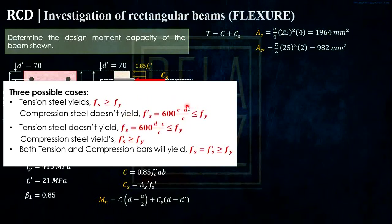So the second case is baliktad naman. The tension steel doesn't yield. So ito yung gagamitin natin, the actual stress. And that should be lesser to FY. And the compression steel will yield. So your FS prime should be greater or equals to FY. The third case is both tension and compression bars will yield. So FS and FS prime should be equal or should be greater or equals to FY.